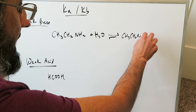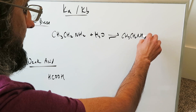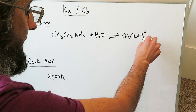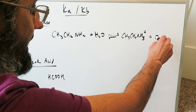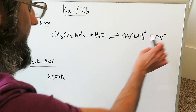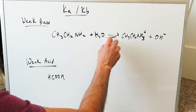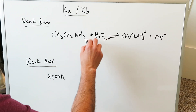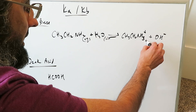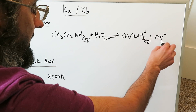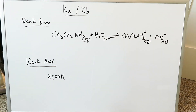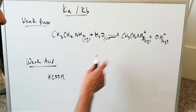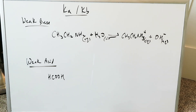We've developed the ethyl ammonium ion (CH3CH2NH3+) and hydroxide. Water here is a liquid, ethylamine is aqueous, ethyl ammonium is aqueous, and hydroxide is aqueous. Only the aqueous species come into your reaction.